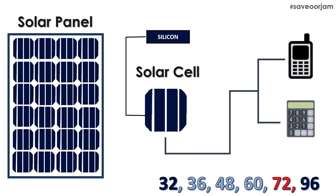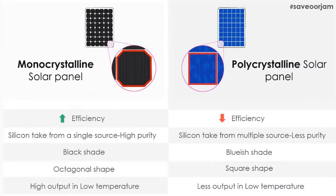These cells are used in monocrystalline, polycrystalline and polycrystalline panels. There are many different types of polycrystalline solar cells.